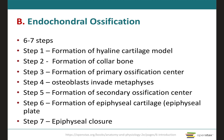Moving on to endochondral ossification — we know that most of the bones of the body are formed by this process, and it is best observed in long bones. There are about six to seven steps depending on how they are broken down. I want you to understand the process of bone formation through endochondral ossification. I have listed seven steps here, and these are the main events that occur at each step, which we will discuss in more detail in the next few slides.